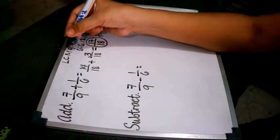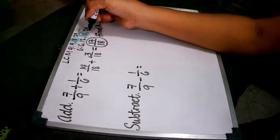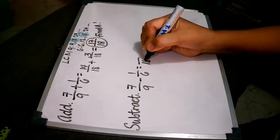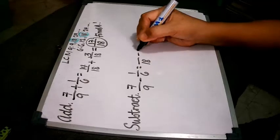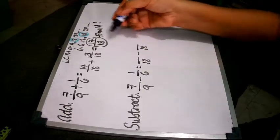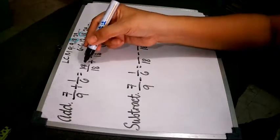So the LCM here, we already have this, which is 18. So we will just copy 18. And then 18 here, which is our denominator.